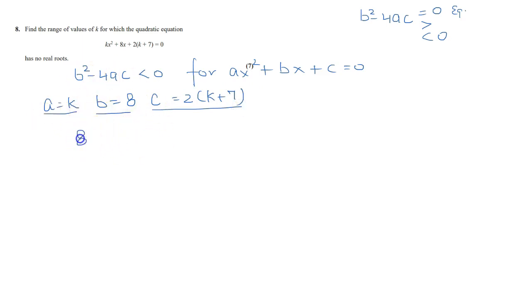These are the values of a, b, and c. We'll apply here. b square means 8 square minus 4, a is k, and c is 2k plus 7. 64 minus 2 and 4, 8k. 8k multiply k is 8k square.